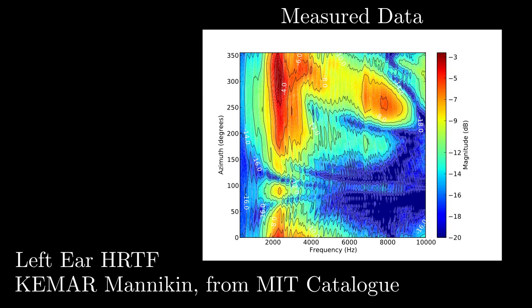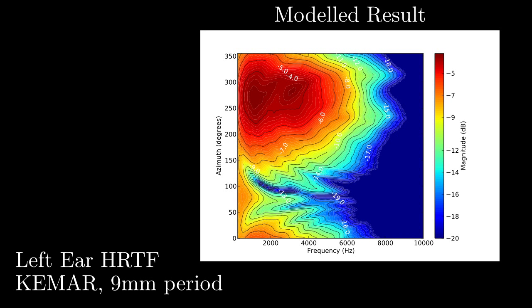Clearly, to achieve an accurate representation for all spatial cues, the model's got to be solved at very high resolution. But if only binaural cues are required, then even coarser grids work well.